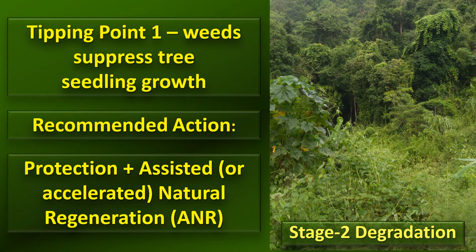Tipping point one is reached when the canopy becomes more open and light intensity at ground level increases. This stimulates the growth of herbaceous weeds which grow up and start to smother the natural regeneration. Under this circumstance, it's not enough simply to protect the natural regeneration — although of course you must continue to do that. It becomes necessary to actually assist the growth of natural regeneration and to ensure its survival.